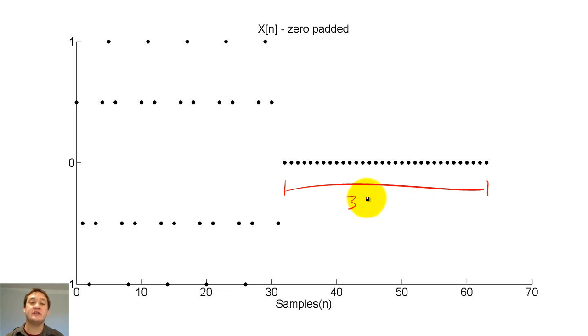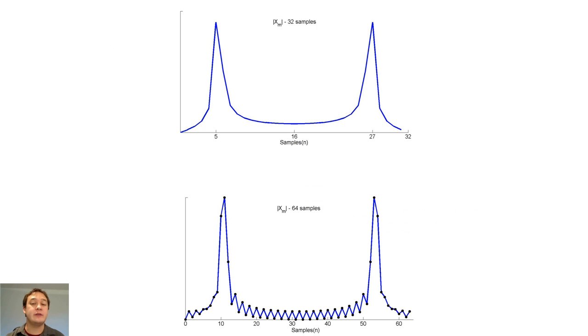Adding zeros to x of n is called zero padding. The 64 sample zero padded DFT of this function would look like the bottom graph.